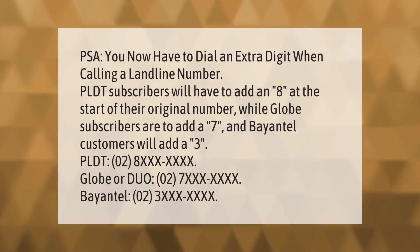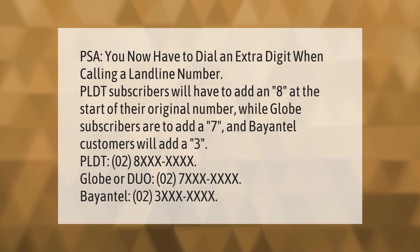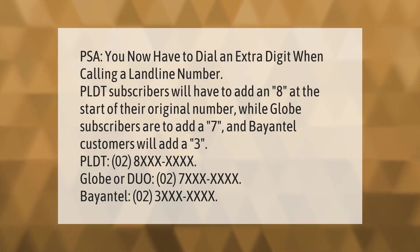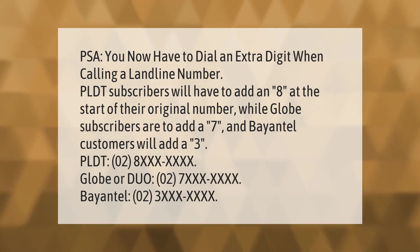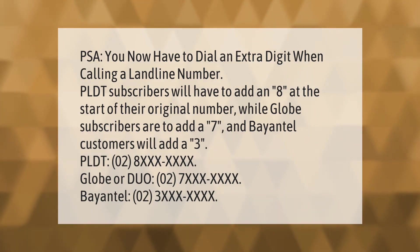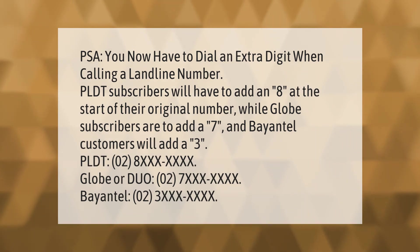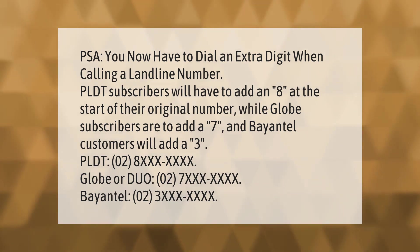You now have to dial an extra digit when calling a landline number. PLDT subscribers will have to add an 8 at the start of their original number, while Globe subscribers add a 7, and BayanTel customers add a 3. Formats: PLDT 02-8xxx-xxxx, Globe/Duo 02-7xxx-xxxx, BayanTel 02-3xxx-xxxx.